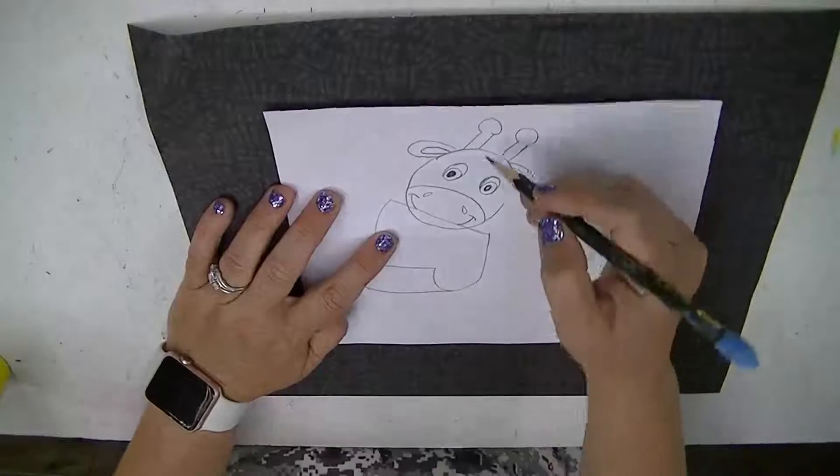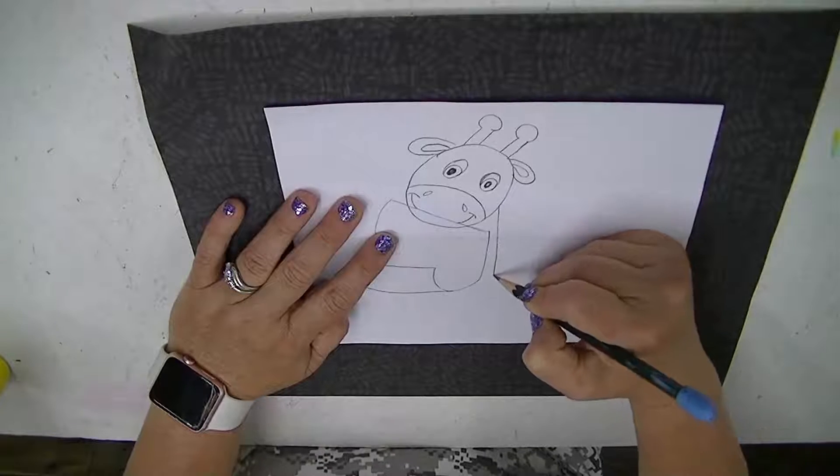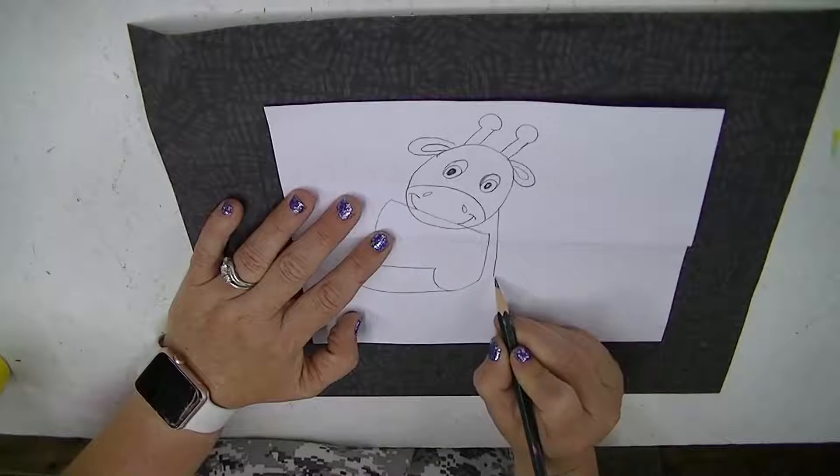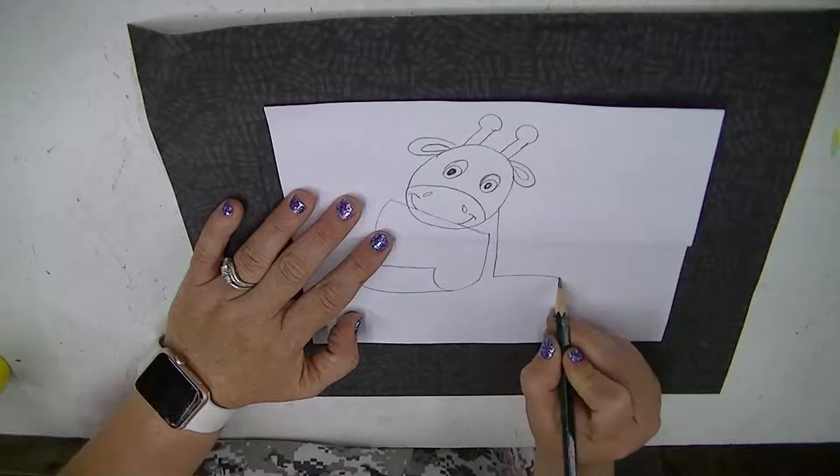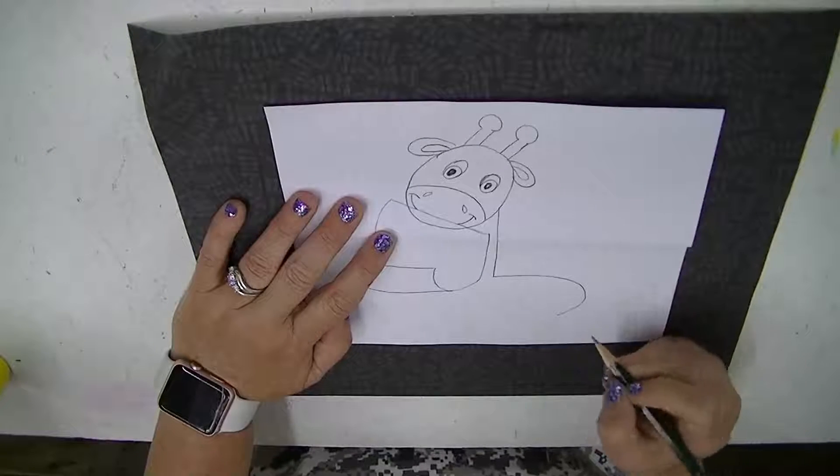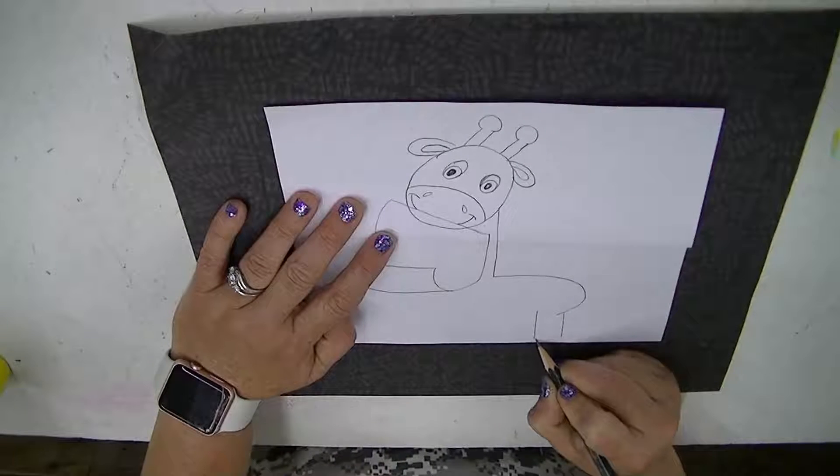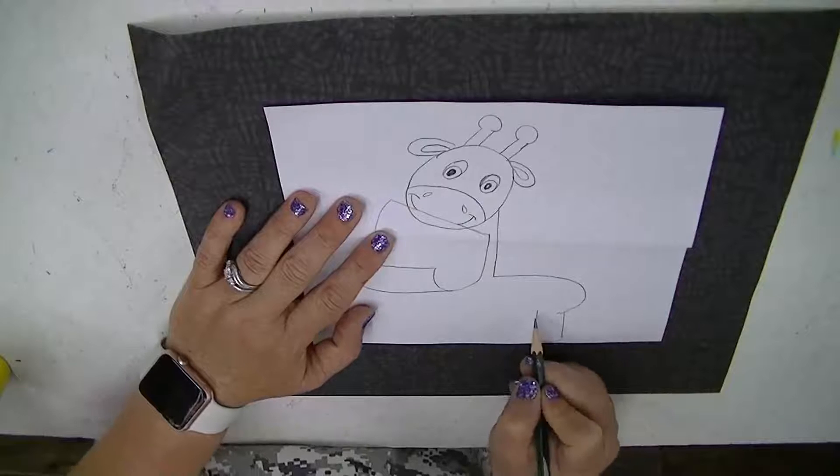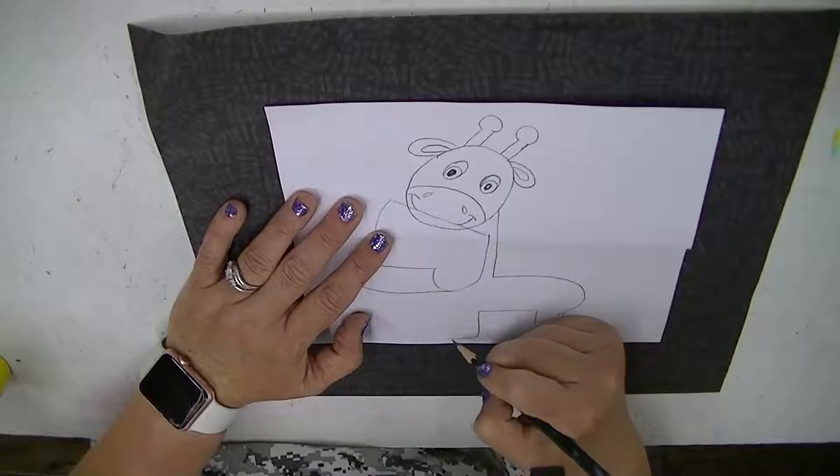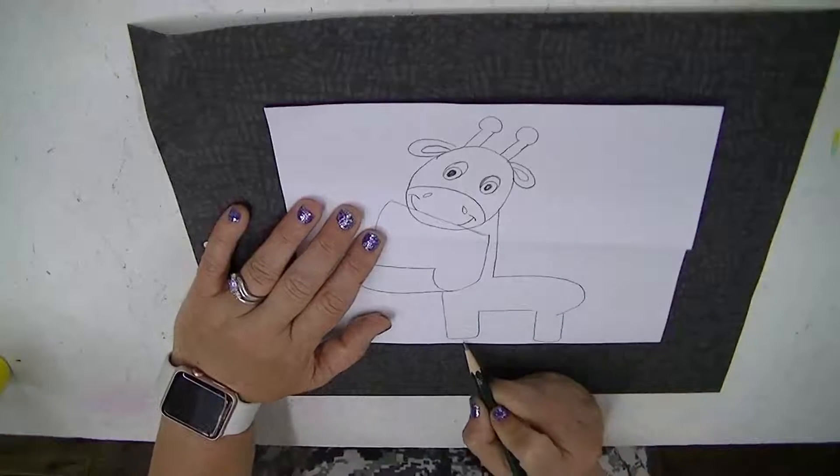So we planned it all out. We measured. His neck is going to go here, and you have to leave room for his little body and his little legs. So we're going to go right around for a little booty, and then we're going to go ahead and put a leg here. Now he's a cartoon giraffe so he doesn't have to be perfect. Come all the way up, and a leg here. So you have a leg here and here.